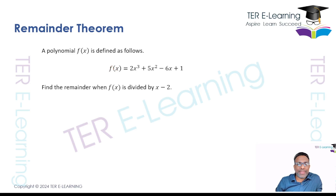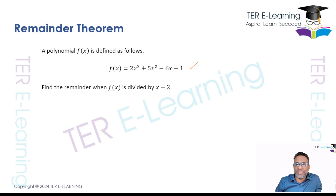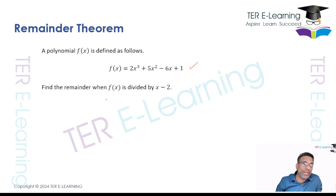So a typical examination question: we have a polynomial f of x defined by this function. f of x is equal to 2x cubed plus 5x squared minus 6x plus 1. We want to work out what is the remainder when f of x is divided by this linear function here.